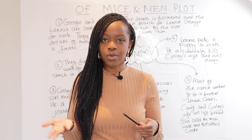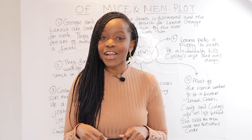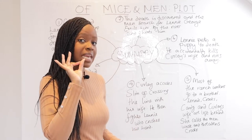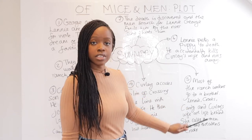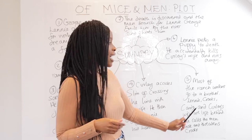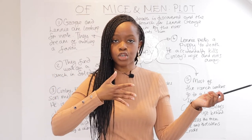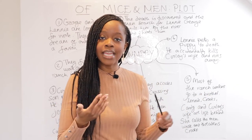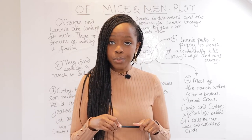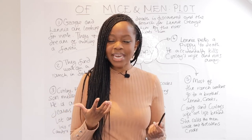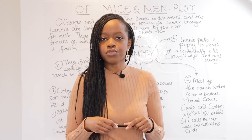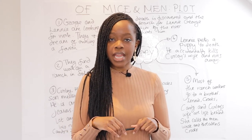The fifth major event is that most of the ranch workers, including Curly himself, go to a brothel — even Curly, despite being newly married. While they're away, key characters are left behind: Lennie, Crooks the only African-American stable buck, Candy the old hand, and Curly's wife. Curly's wife enters Crooks's place and insults the men for being weaker. When Crooks tries to stand up for himself and asks her to leave, she threatens him, saying she could have him lynched if he doesn't know his place.